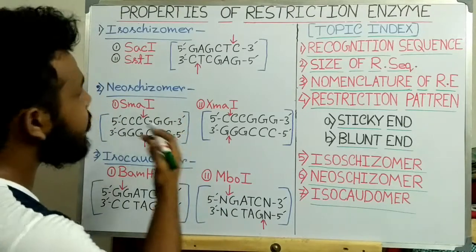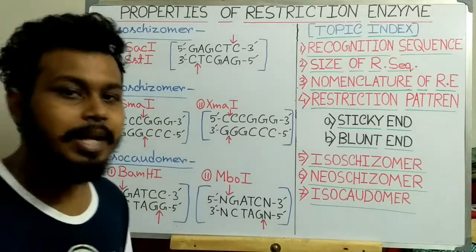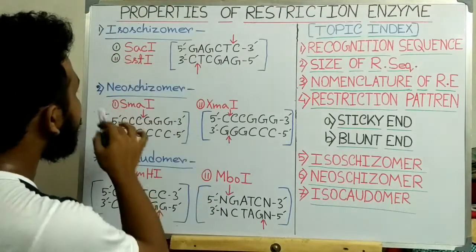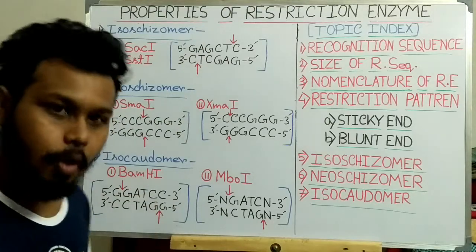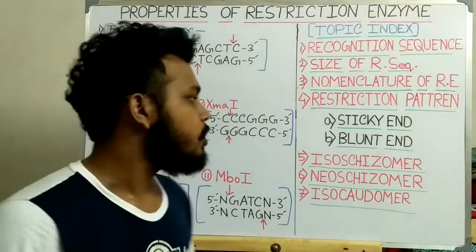So these are the differences and similarities between the isoschizomers, neoschizomers, and isocaudomers.